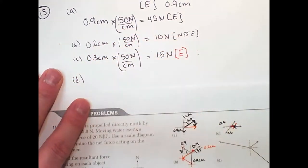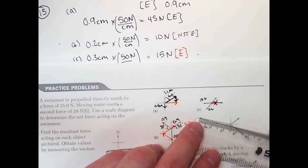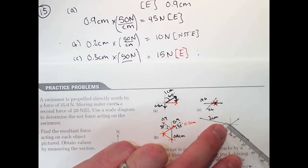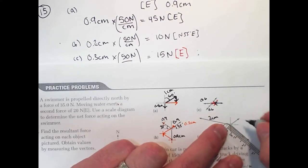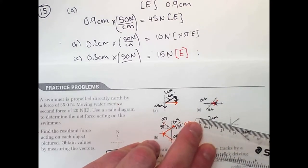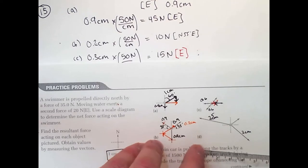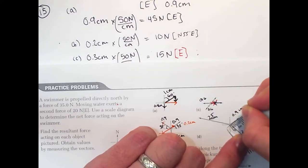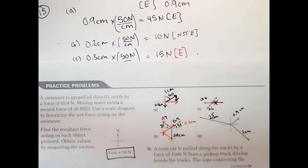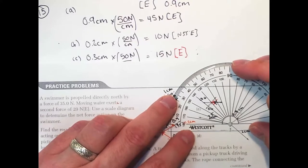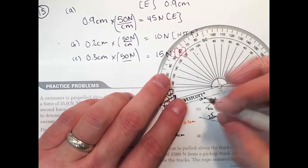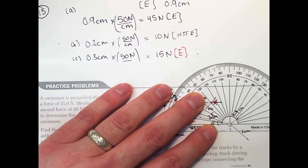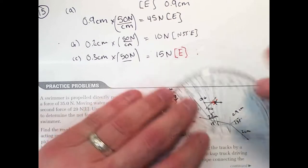For D, which is the easiest of the four because the lengths are a bit easier to measure: I get 2 centimeters, about 2 centimeters, 2.5 centimeters, and 0.9 centimeters. I then take a protractor to measure the angles — about 15 degrees and about 35 degrees. I'll pick one and start adding them together.